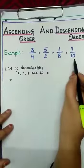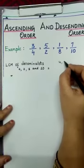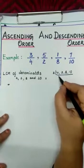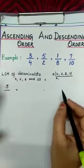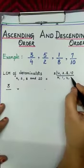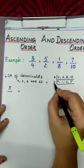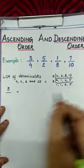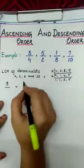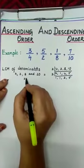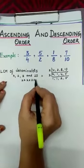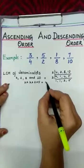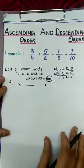Finding LCM of 4, 2, 8, and 10: 2 is a common factor. Dividing: 4÷2=2, 2÷2=1, 8÷2=4, 10÷2=5. Again 2 is a common factor of 2 and 4: dividing gives 1, 1, 2, 5. Now 2 and 5 have no common factor, so we stop. LCM = 2 × 2 × 2 × 5 = 40.